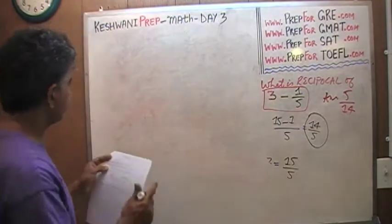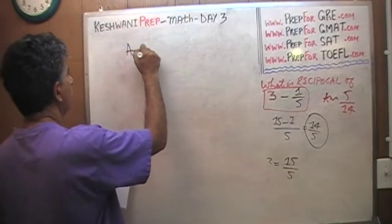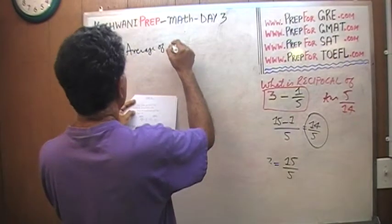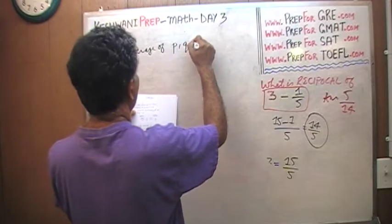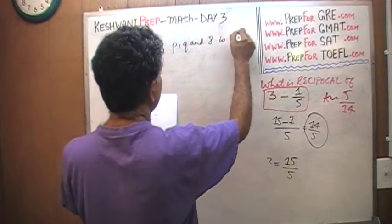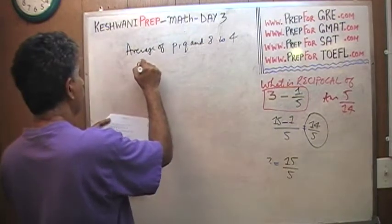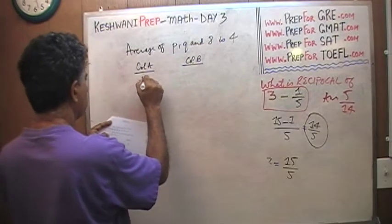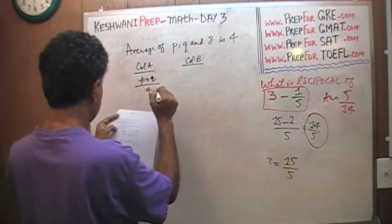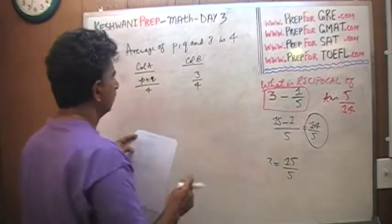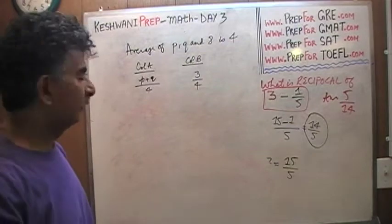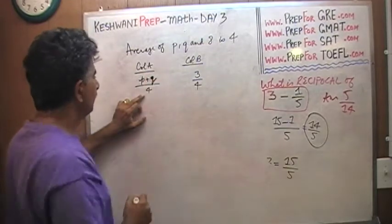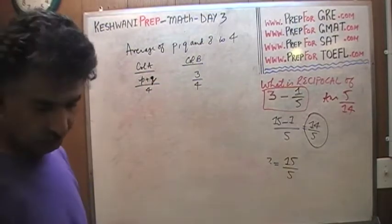There is a question for today. We are told that the average of B, Q and 8 is 4. The question simply is which of these two quantities is greater? B plus Q divided by 4 or 3 quarters? Let's work on it.